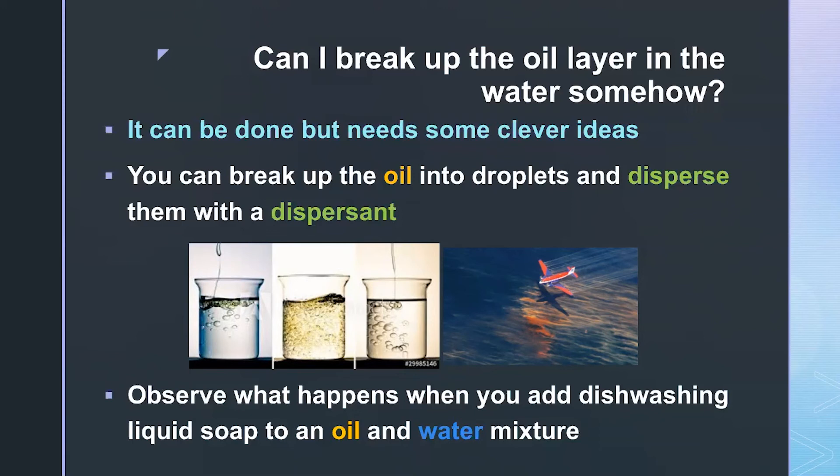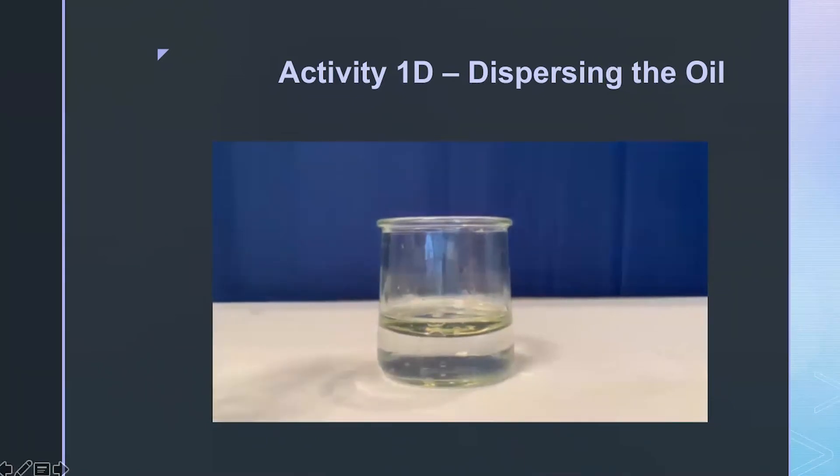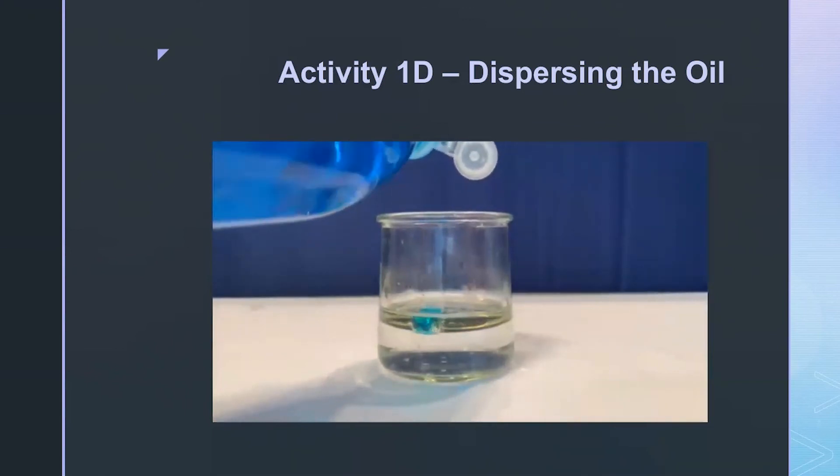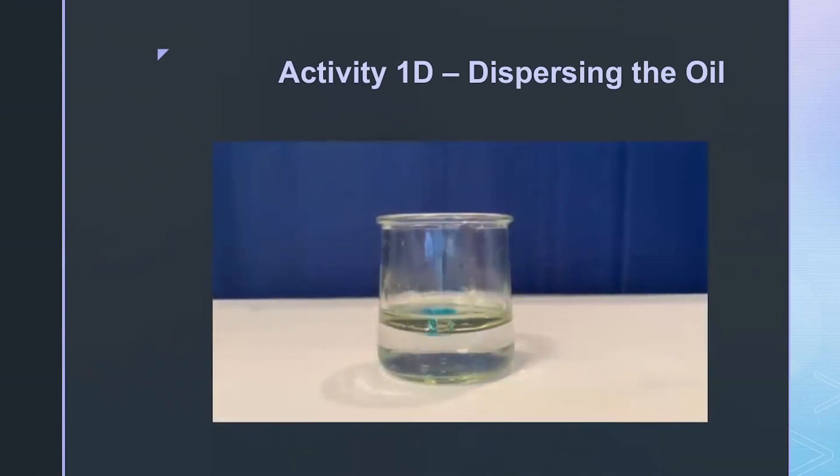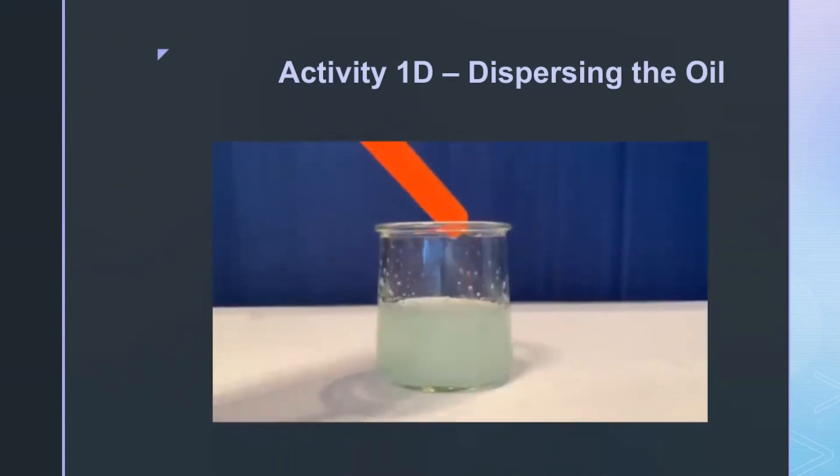In the next activity, we're going to look at what happens when we add dishwashing liquid soap to your oil and water mixture and see if we can break up the oil away from the water into smaller droplets. So if I cannot remove the oil, maybe I can disperse it and break it apart so it gets diluted and is less harmful. In this activity, we're going to try to do exactly that. I have a little container with water and some light oil floating on the top and I'm just adding a few drops of dishwashing liquid soap. Then I'm going to take the back end of my spoon and stir this mixture vigorously, as vigorously as you can, for a few seconds and then we're going to observe what happens.